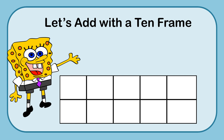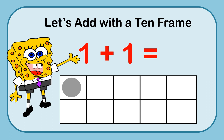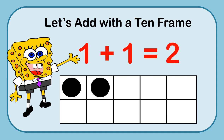We're going to take our first equation, which is 1 plus 1, and we're going to use markers for our 10-frame to help solve this equation. So we're going to put 1 and 1 more, and let's count those up: 1, 2. So 1 plus 1 equals 2.